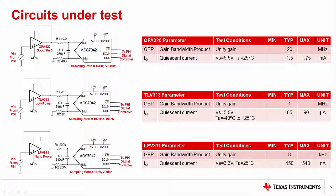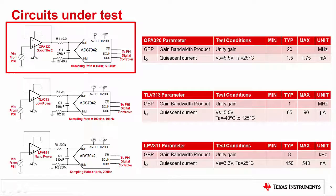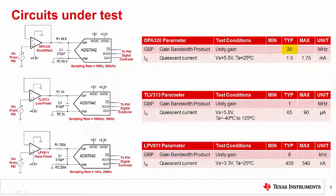For this experiment, we will measure three different amplifiers. Keep in mind that the quiescent current is inversely proportionate to the amplifier's bandwidth, and wide-bandwidth amplifiers are required for high sampling rates. First, we will use the OPA320 for sampling rates of 1 MS/s and 500 kS/s. This amplifier has a bandwidth of 20 MHz and a maximum quiescent current of 1.75 mA.